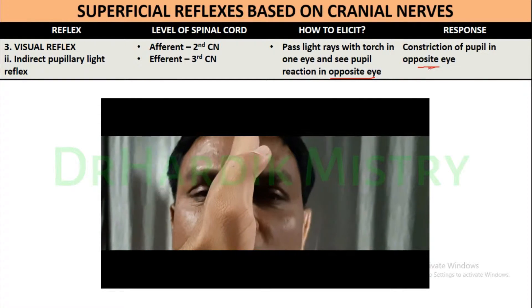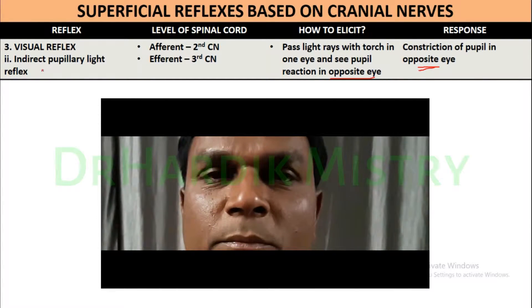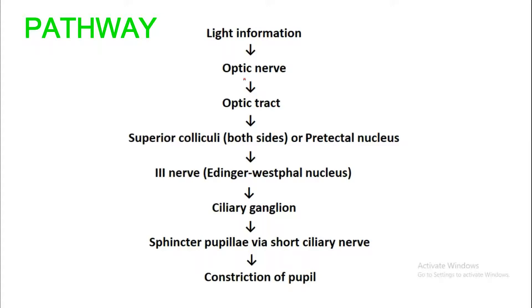The light information travels via the optic nerve and optic tract to the superior colliculi on both sides, or the pretectal nucleus. From the superior colliculi or pretectal nucleus, fibers go to the third cranial nerve nuclei — known as the Edinger-Westphal nucleus. From here, fibers go to the ciliary ganglion, and from the ciliary ganglion there is constriction of the pupil via the short ciliary nerve.